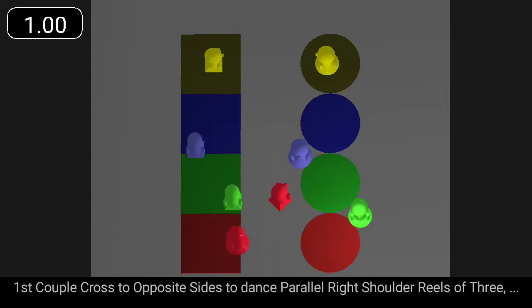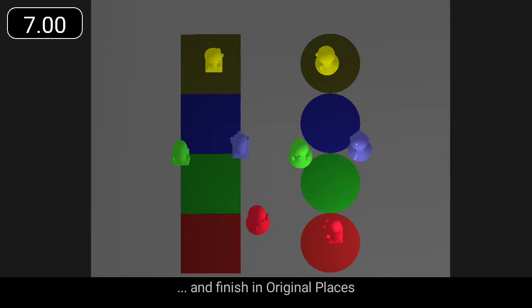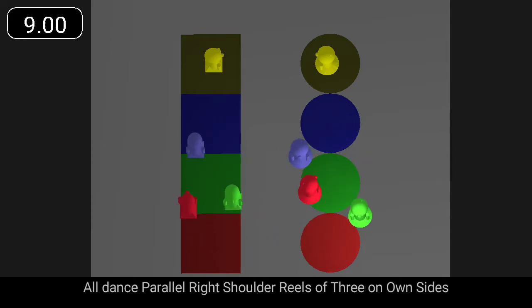First couple cross to opposite sides to dance parallel reels of three. First couple cross to own sides to dance parallel reels of three.